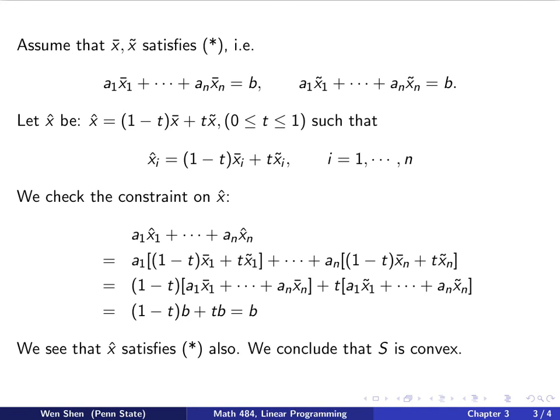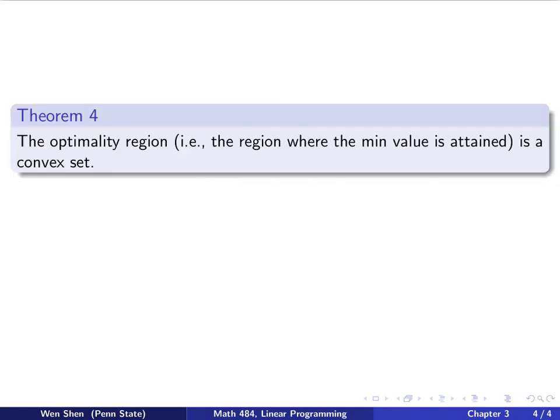So we see that x-hat satisfies the constraint. Therefore, the set of that single constraint is a convex set, and the feasible region is the intersection of all the constraints. Each of them is convex, and therefore S is also convex. So we have shown that the feasible region is convex.